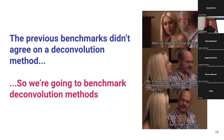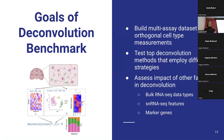So what we decided to do was perform our own benchmark on deconvolution methods. The goal was first to build a multi-assay dataset with orthogonal cell type measurements to better answer this question. Then we're going to test some top deconvolution methods with different strategies on that dataset. And finally, assess the impact of other factors on deconvolution, such as different types of bulk RNA-seq, different features in your single nucleus RNA-seq input, and also the effect of selecting marker genes.